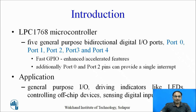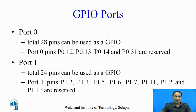Let us understand the ports of LPC 1768. LPC 1768 comes with 5 general purpose bi-directional digital IO ports, port 0 to port 4. They support fast GPIO, i.e. enhanced or accelerated features. Additionally, port 0 and port 2 pins can be used to generate single interrupts. GPIO ports are generally used for general purpose input to output interfacing, driving indicators like LEDs, controlling offshore devices like relays, or sensing digital inputs.